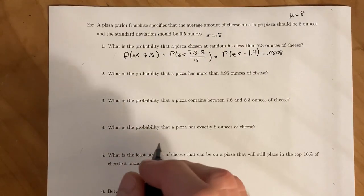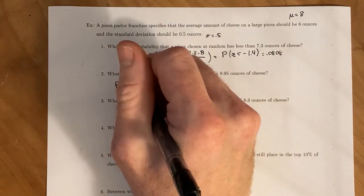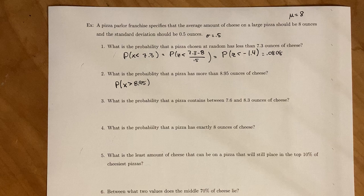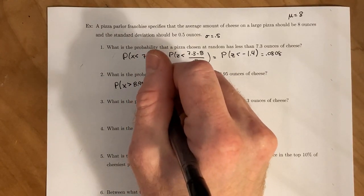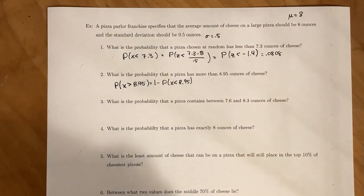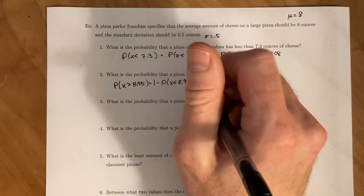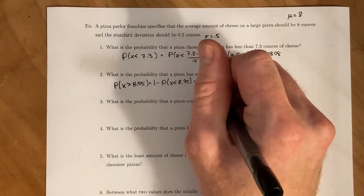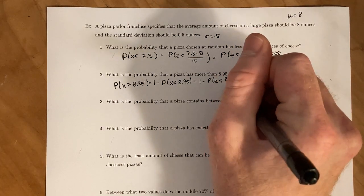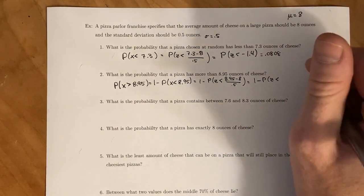Next, we want to find the probability that a pizza has more than 8.95 ounces. We're looking for the probability that x is greater than 8.95. Since we're looking to the right, a greater than statement, we have to convert it to a less than statement first. So we can look at 1 minus the probability that x is less than 8.95. Then we take our x-statement and turn it into a z-statement, converting from x-scores to z-scores. We're looking at the probability that z is less than 8.95 minus 8 over 0.5. So 1 minus p of z less than, and that gives us 1.9.